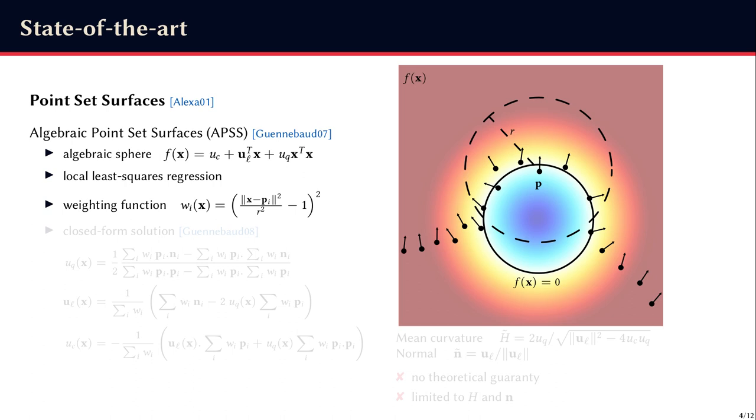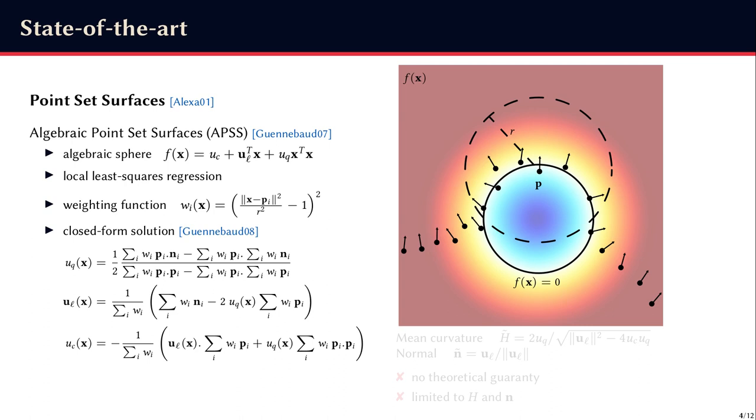At a given point P of the point cloud, an algebraic sphere is fitted to the neighborhood of radius r using a weighted least square regression. The algebraic sphere that is fitted, shown in color here, is defined by a scalar field F that contains three parameters: a constant, a linear, and a quadratic parameter denoted by uc, ul, and uq.